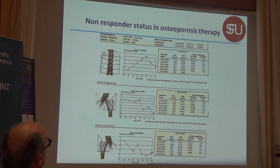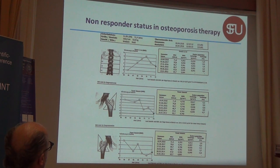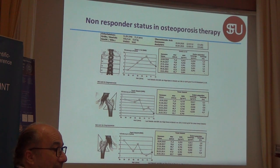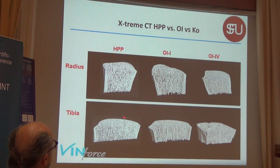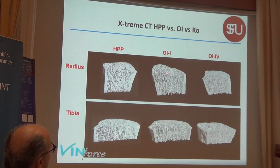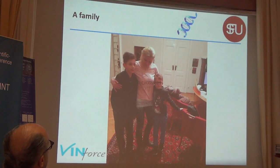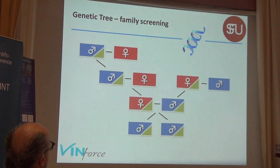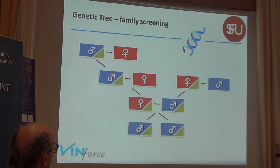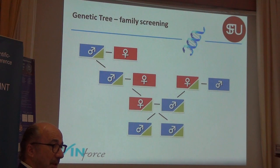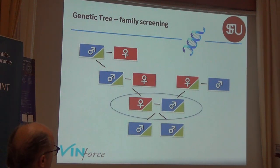Forget the lumbar spine findings because those were degenerative changes. But if you look at the hips, they never responded to any osteoporosis medications, and now we found a reason: HPP. There are no typical changes in the bone architecture in high-resolution analysis. And this is the family — the mother with her two children — and the genetic tree. Very notably, the father was also a carrier of HPP, which appears perhaps one time in thousands of cases where both parents carry this gene mutation.